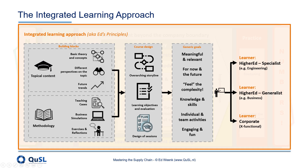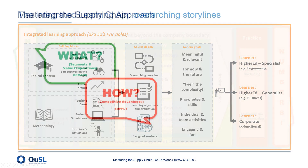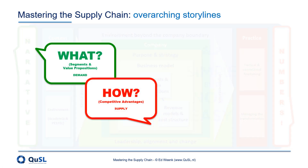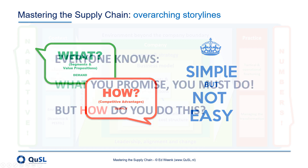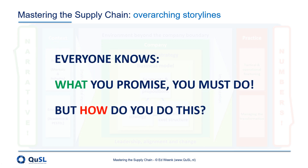We have dubbed the overarching storylines for Mastering the Supply Chain as the stories of 'what and how' and 'simple but not easy.' Like our parents have taught us when we were young, what you promise, you must do. But how do you do that? Like we do ourselves in our private lives, companies also make promises.